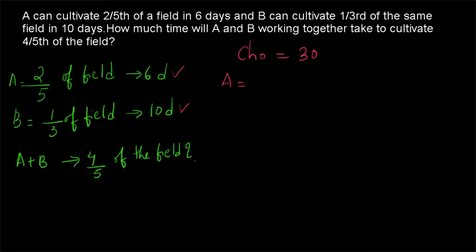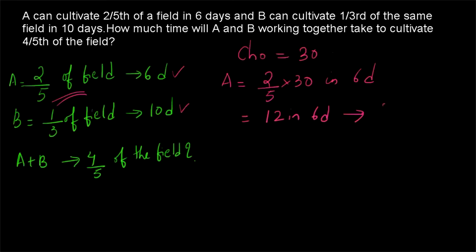We need to find out how many chocolates A is having per day. A is cultivating two-fifths of the field in six days — that means A will be having two-fifths of thirty chocolates in six days, which is twelve chocolates in six days. So A is having two chocolates per day.